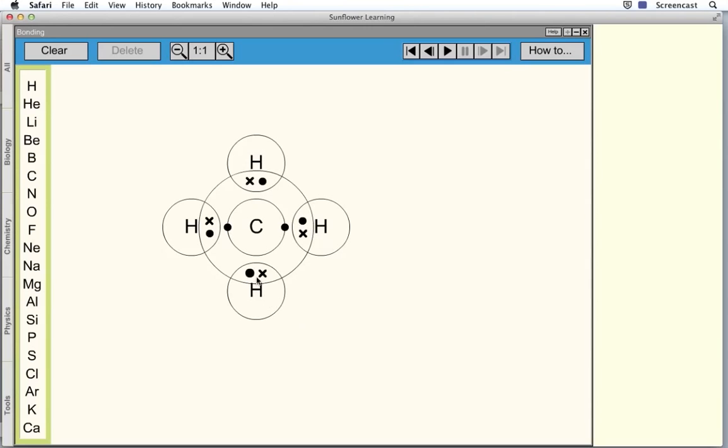So we've got four covalent bonds, four pairs of electrons shared with four hydrogen atoms. The formula for methane is CH4. So this is referred to as a dot-cross diagram.